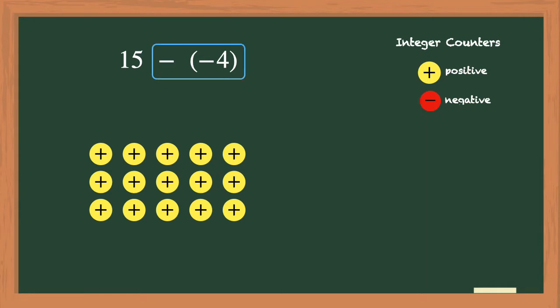Now we'll look at the minus negative 4. The subtraction sign here means to remove, and the negative 4 means that we need to remove 4 negative counters. But as you can see, we only have positive counters, so we will need to use 4 zero pairs in order to have negative counters to remove.